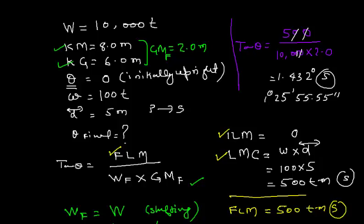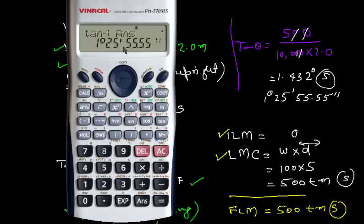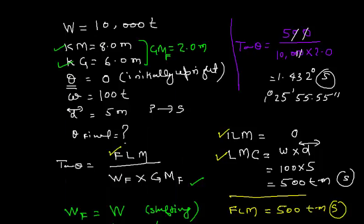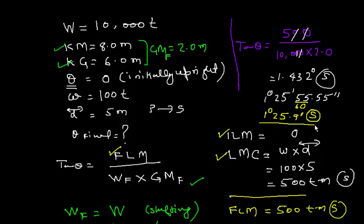We can round this off: dividing 55.55 seconds by 60 gives approximately 0.9 minutes. So the final answer is 1 degree 25.9 minutes towards starboard.